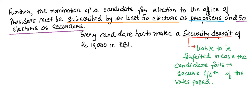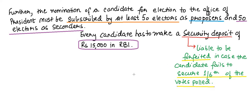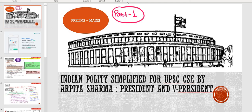Every candidate has to make a security deposit of rupees 15,000 in the RBI. This security deposit of ₹15,000 is liable to be forfeited if the candidate fails to secure one-sixth of the votes polled; otherwise it is returned. So this was Part 1 of the chapter on President.